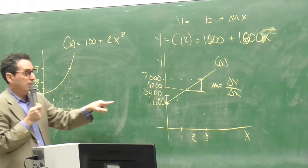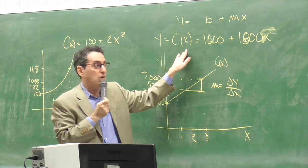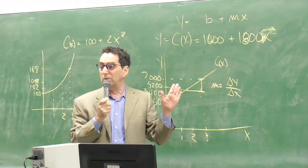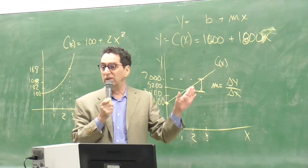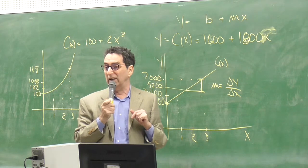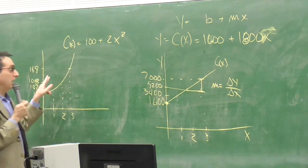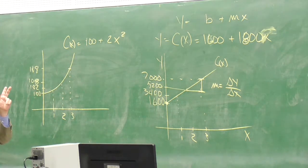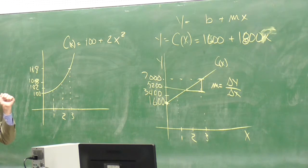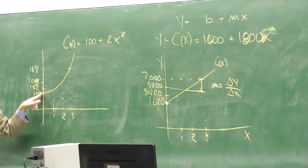So here, in this example, the marginal cost is always the same. It's always $1,800. If I go from 1 to 2, 2 to 3, 3 to 4, 4 to 5, it's always going to be $1,800 more. But here, it's not — it's changing. So the marginal cost is not always the same. It's always the same if it's a linear model, but if it's a nonlinear model, it's not the same.